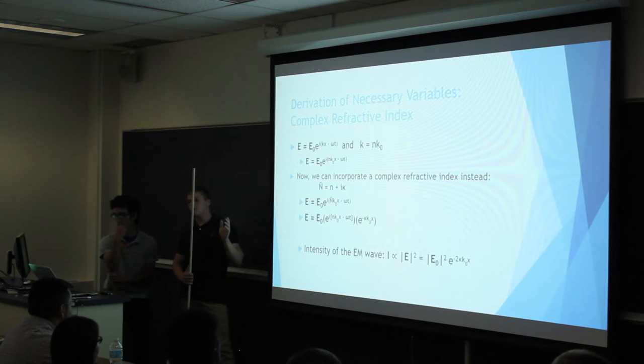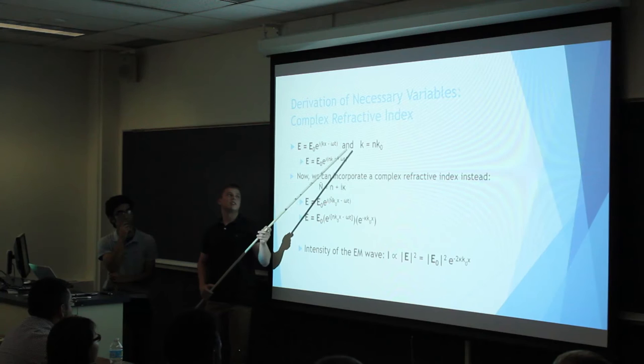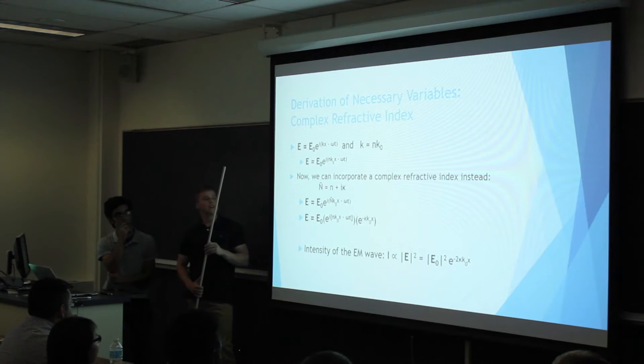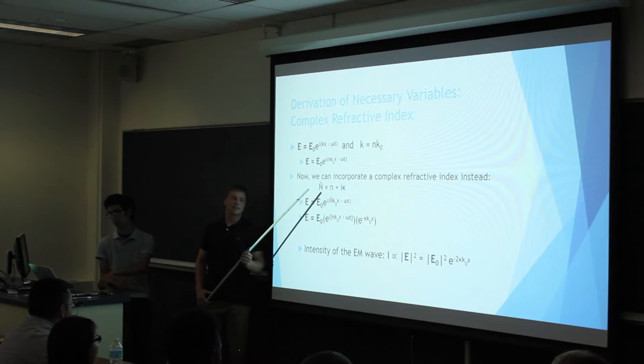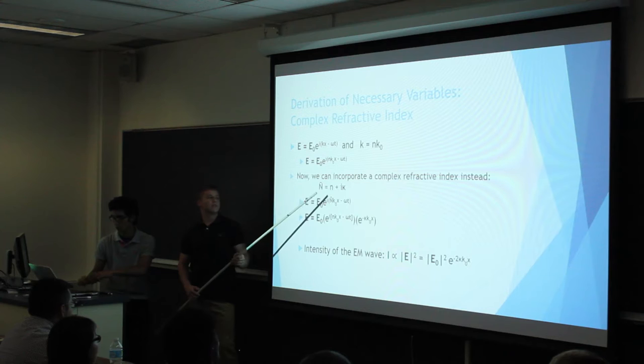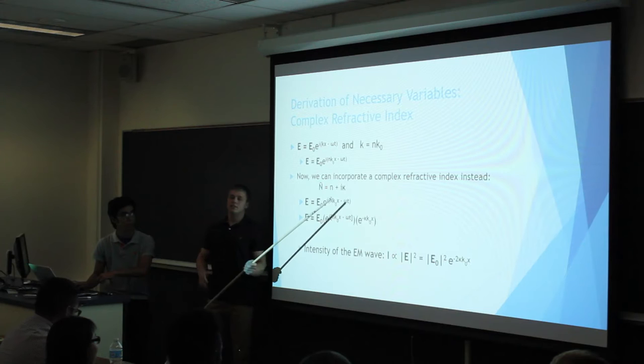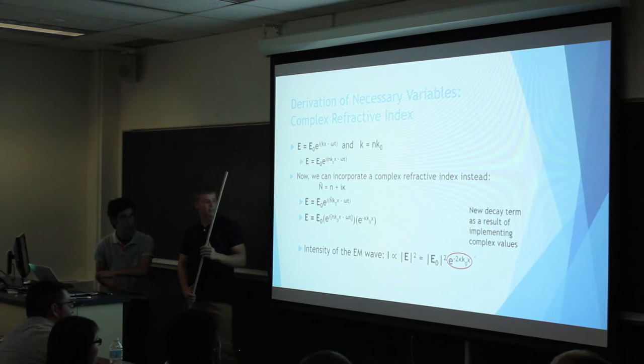Using those equations derived on the last slide, we substitute in n*k naught for k to get this equation. We actually incorporate a complex refractive index instead, being n plus i*kappa, n being the real part of the refractive index, and i*kappa being the imaginary part. Substituting those in for n, we end up with this equation, with the last term being related to the decay rate of the wave as it travels through the material.